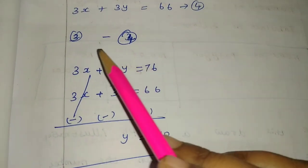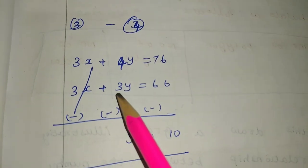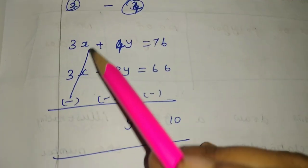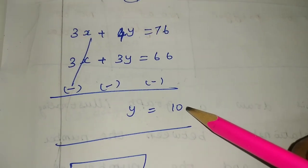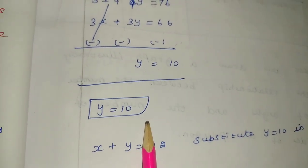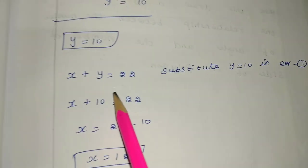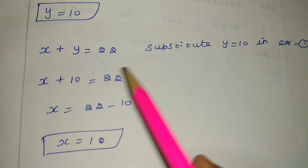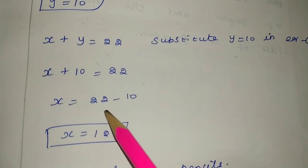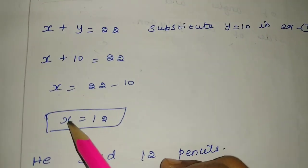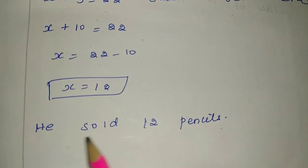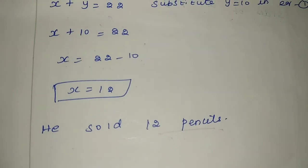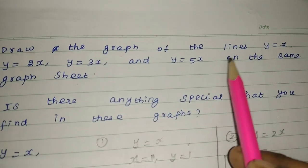Subtracting the equations, we get y = 10, then solving back we find the number of pencils is 12. So, the vendor sold 12 pencils. Clear — that's the solution for this sum.